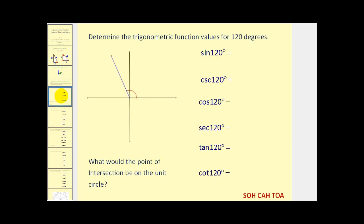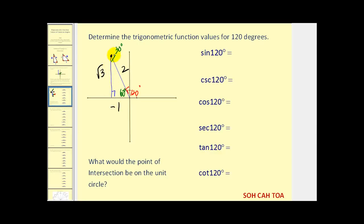Let's determine the six trigonometric values for 120 degrees. We form our reference triangle by drawing a segment from a point on the terminal side to the closest part of the x-axis. The reference angle is 60 degrees, which makes the remaining angle 30 degrees — so this is a 30-60-90 triangle with sides one, two, and square root of three. The x-coordinate of our point is negative one, while the y-coordinate is positive square root of three.